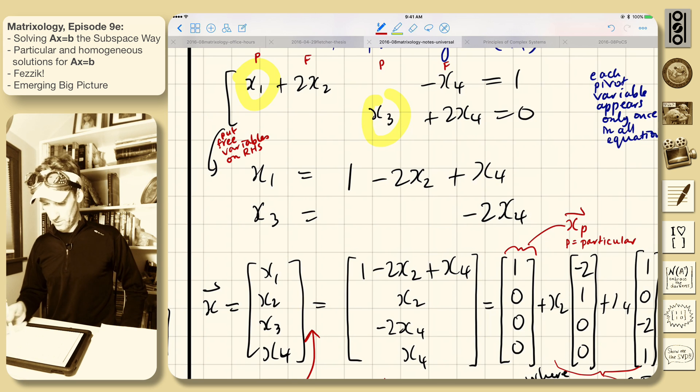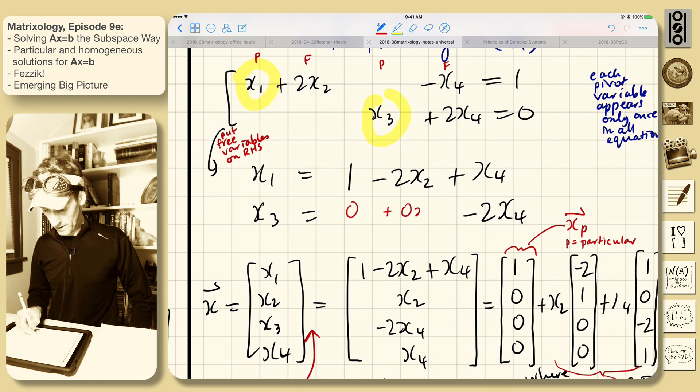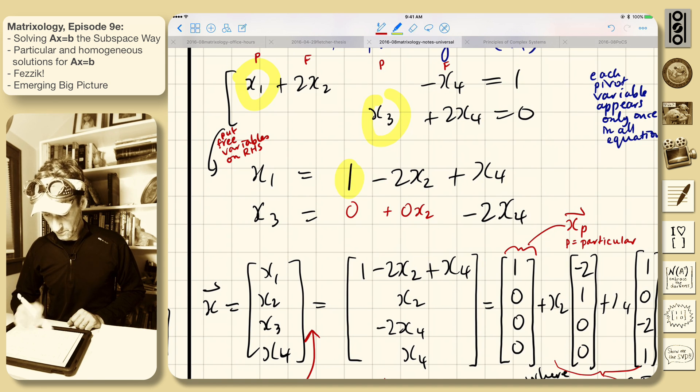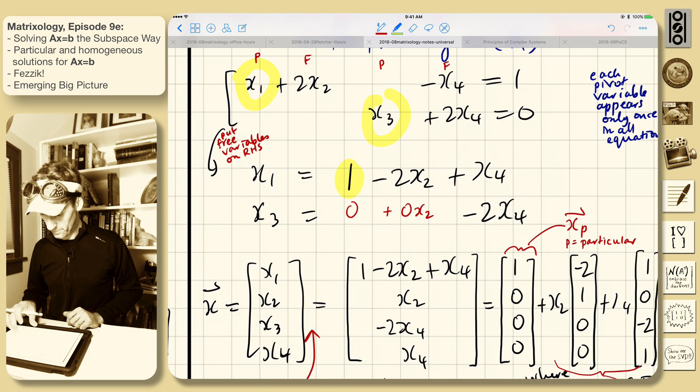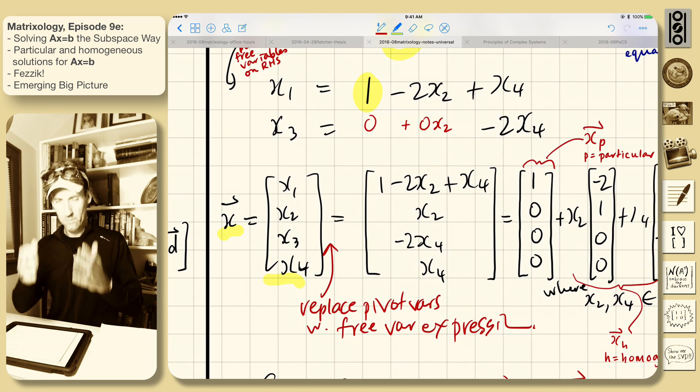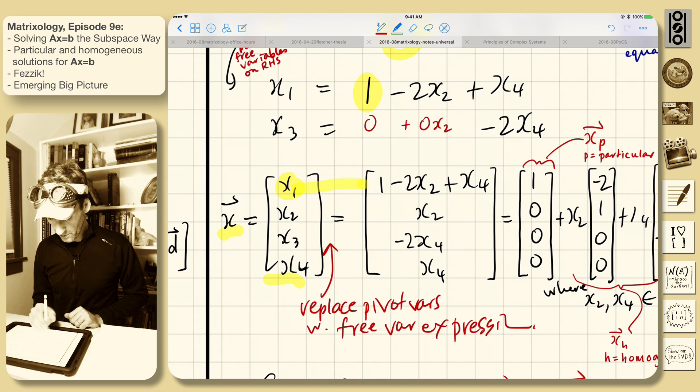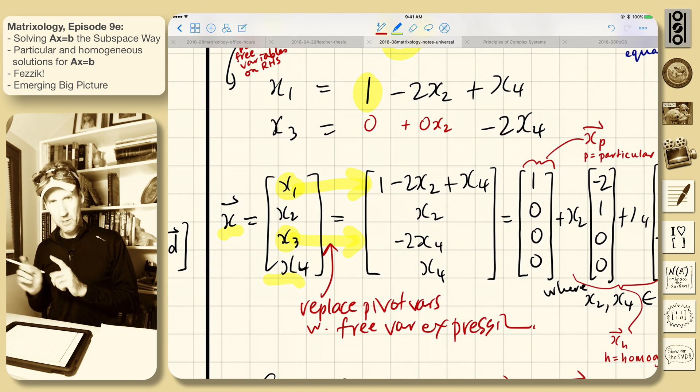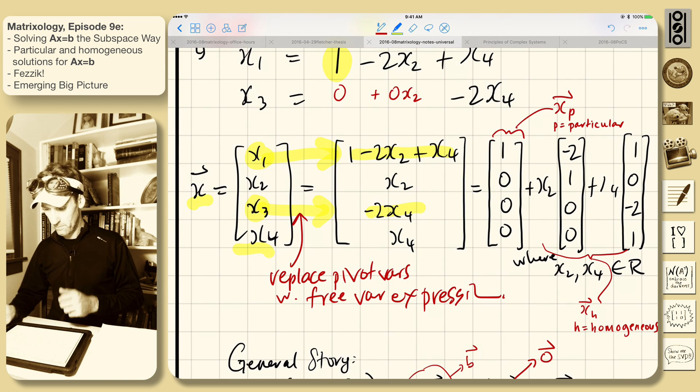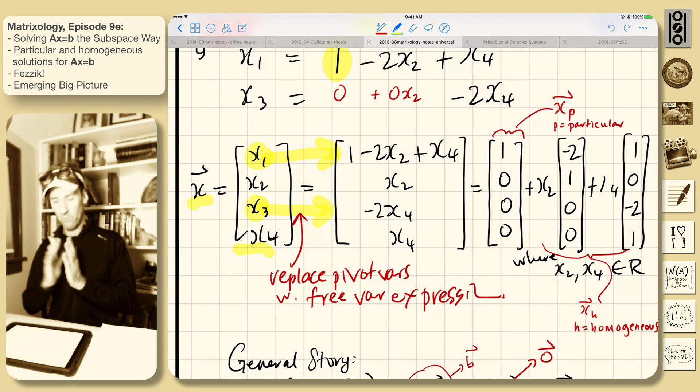So we end up structured in that same way, so that we have a zero here plus zero x2. This is the difference in the null space - is that we have a 1 here. Normally it would be all zeros, but we still proceed in the same way. So we write down x equals x1, x2, x3, x4, and then we replace the pivot variables with their expressions in terms of the free variables. So x2 and x4 don't change - they're free. And here are these expressions that we wrote down just above for the pivot variables. And we break this apart.